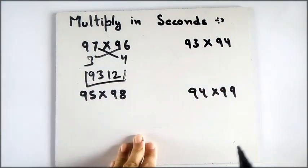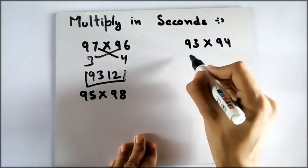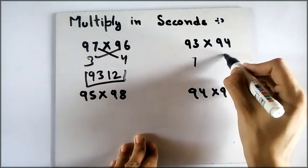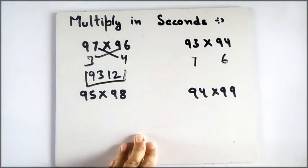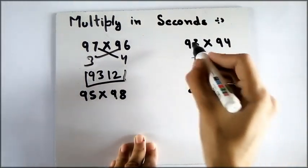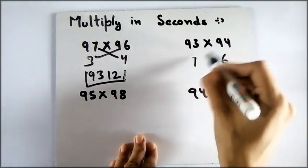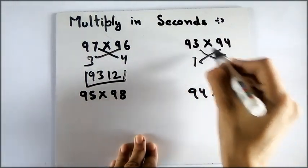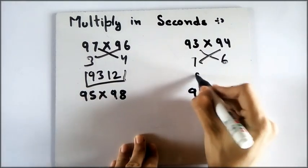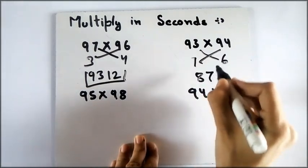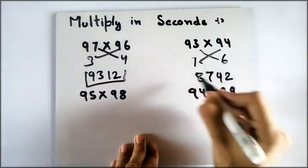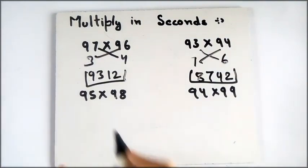Take a look at this one — we will do the same thing. It is 7 less than 100 and it is 6 less than 100. I will subtract this from this one and it is 87. And 7 times 6 are 42, so this is our answer.